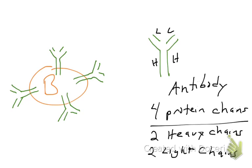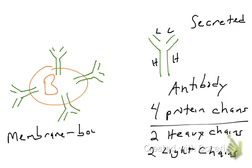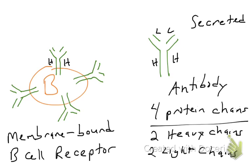This four-protein complex is known as an antibody. Now, the thing about antibodies is they're secreted. So when this Y-shaped protein molecule is present in your humors or your fluids, that's when we call it an antibody. But this complex can also exist inserted into the membrane of B cells — it is membrane bound at some point in its life cycle. When it's in the plasma membrane of a B cell, it's actually called something else: it's called a B cell receptor.